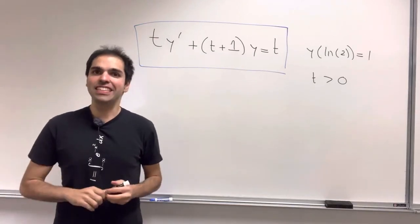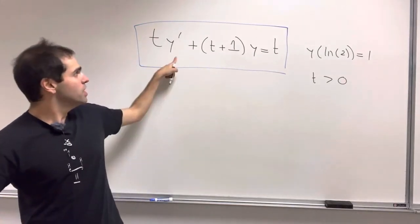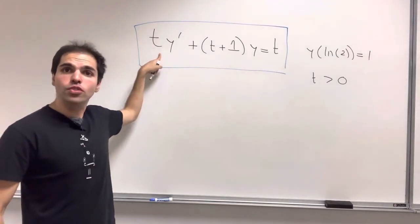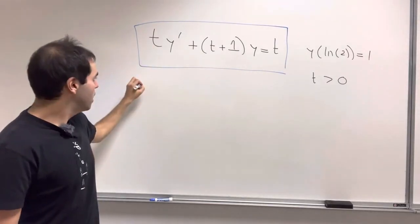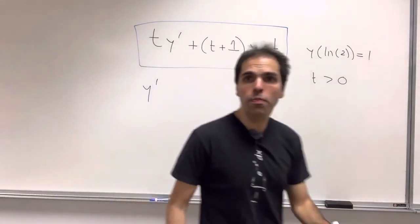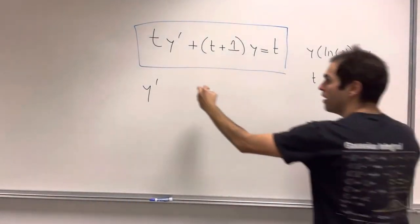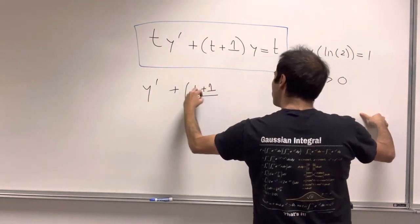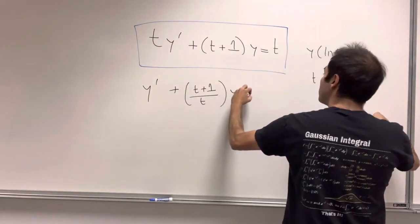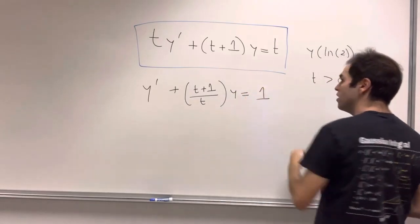Let's solve an equation using integrating factors. So here, the first step is to write this in standard form by dividing by t. And in this case, what we obtain is y prime plus (t+1)/t times y equals t/t, which is 1.